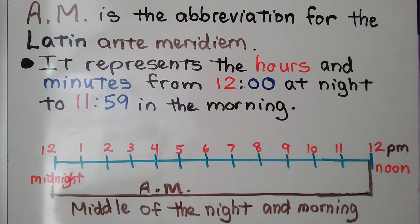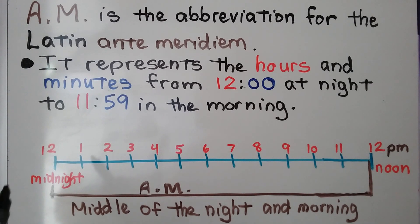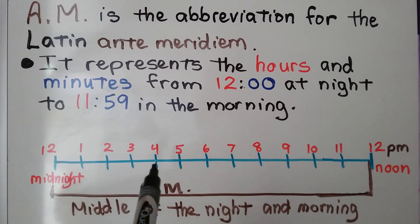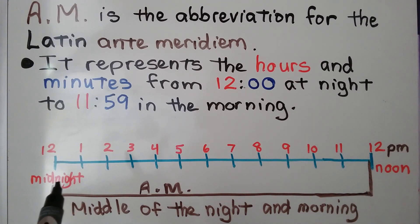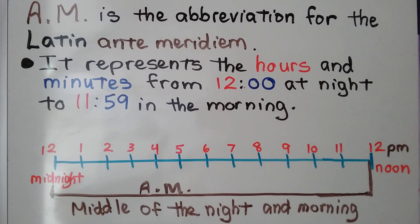A.M. is the abbreviation for the Latin 'ante meridiem.' It represents the hours and minutes from 12 o'clock at night to 11:59 in the morning. So it goes from midnight — when you would still be sleeping — then 6 in the morning, 6 A.M., and then 12 noon when you eat lunch. It goes from the middle of the night through the morning to right before lunch. That's A.M.